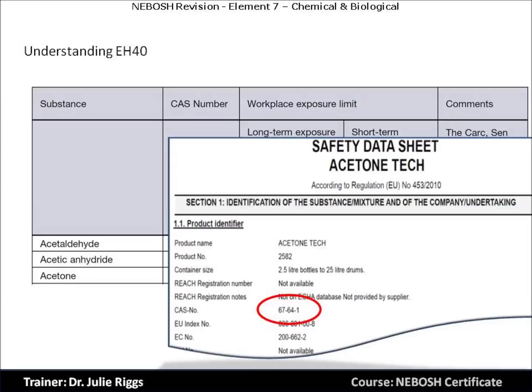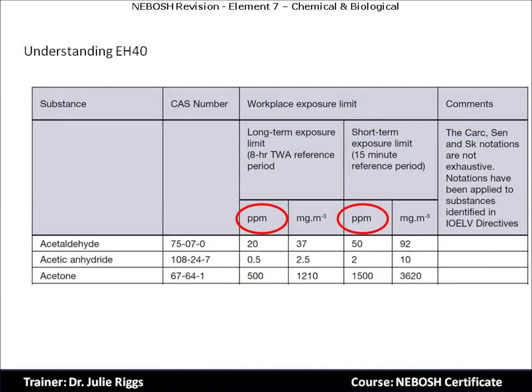We can also find the CAS number on the Manufacturer's Safety Data Sheet. Look at the Manufacturer's Safety Data Sheets within your business to find the CAS number. If you do not have any to hand, use a search engine online to find products with Manufacturer's Safety Data Sheets. So now we understand that the CAS number is a unique number given to that chemical.